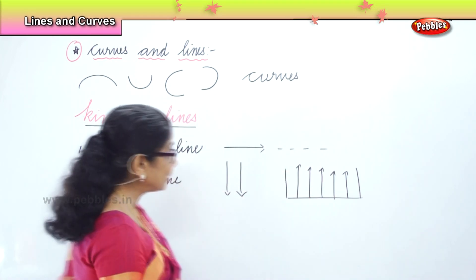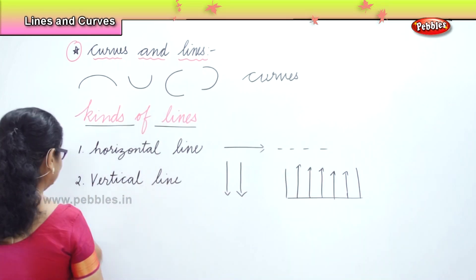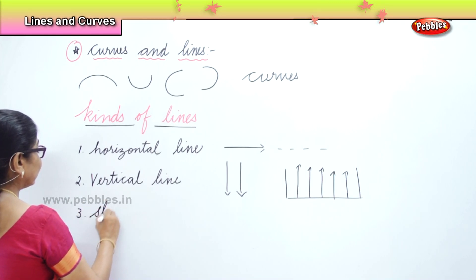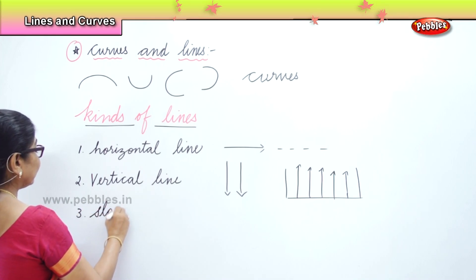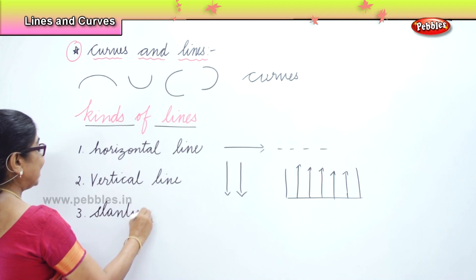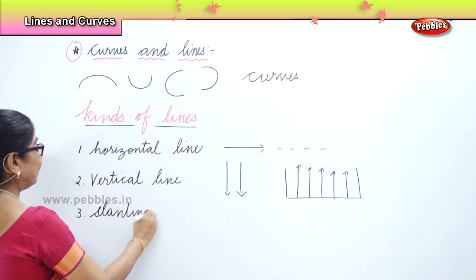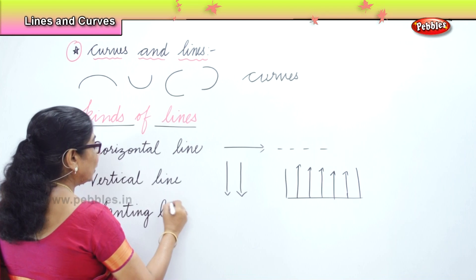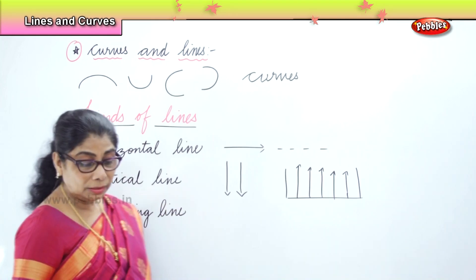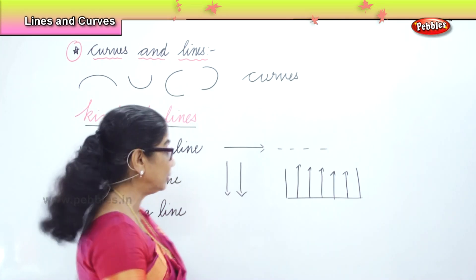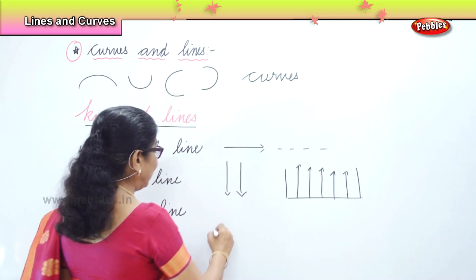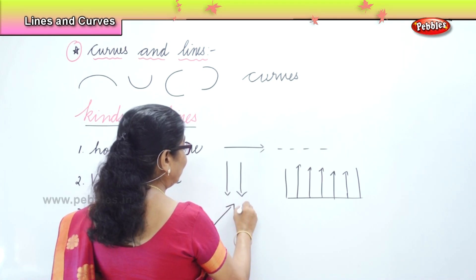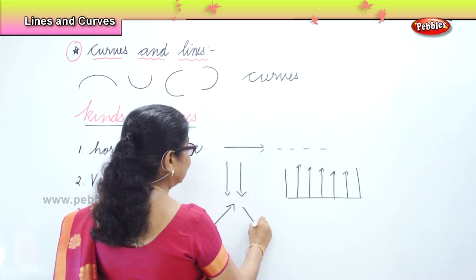Then you have the slanting line. Next, what we need is slanting line. When I say slanting line, we talk about ladders. When we have ladders, we have a line going this way and then a line going this way.